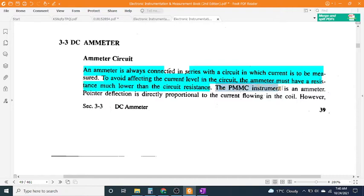The PMMC instrument is an ammeter. Pointer deflection is directly proportional to the current flowing in the coil.